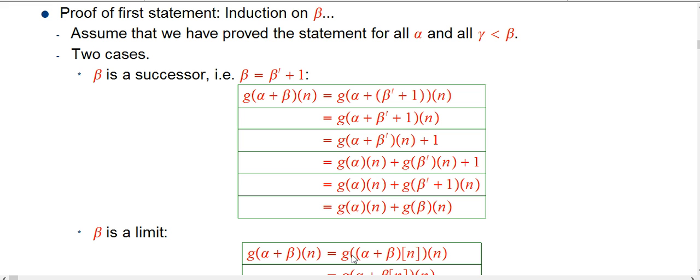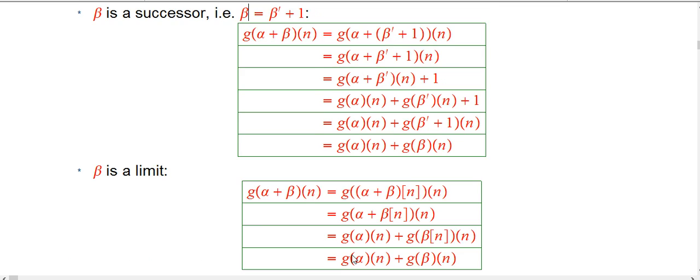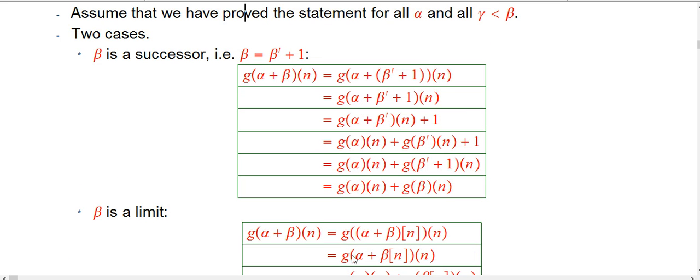Mostly that's straightforward, but there's going to be a tricky bit. Which means that you have to be somewhat careful. Here's where we are going to use a little bit more of the power of this assumption, that we've proved it for all ordinals, say gamma, less than beta.